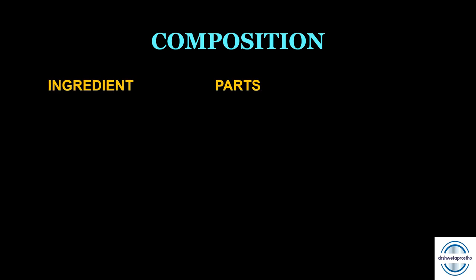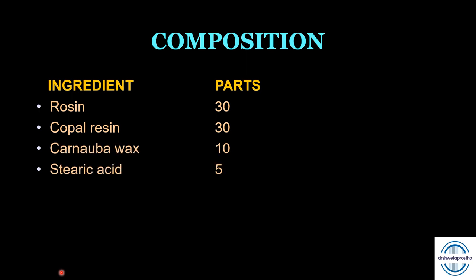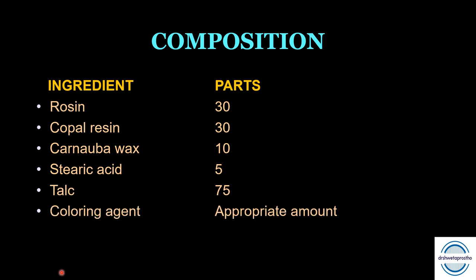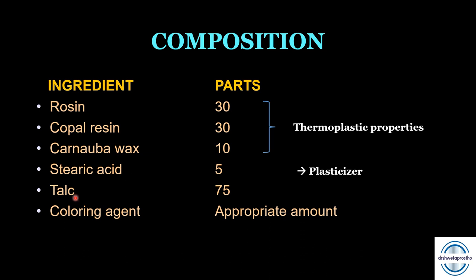The composition of impression compound is: resin 30 parts, copal resin 30 parts, carnauba wax 10 parts, stearic acid 5 parts, talc 75 parts, and coloring agent in appropriate amount. Resin, copal resin, and carnauba wax all give thermoplastic properties. Stearic acid along with shellac or gutta-percha acts as plasticizers, improving plasticity and workability. Talc is the main filler — it reduces plasticity and increases strength. The most common coloring agent is rouge, giving the typical red color.